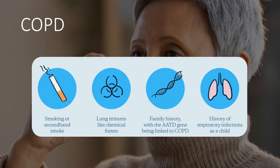Causes of COPD include smoking or secondhand smoke as the biggest factor, and lung irritants from chemicals in occupations such as textile or dye industries. There is also familial history of COPD, alpha-1 antitrypsin deficiency — which reduces antiprotease, allowing protease to dominate and cause lung breakdown — and history of respiratory infections in childhood causing permanent lung damage leading to COPD later in life.